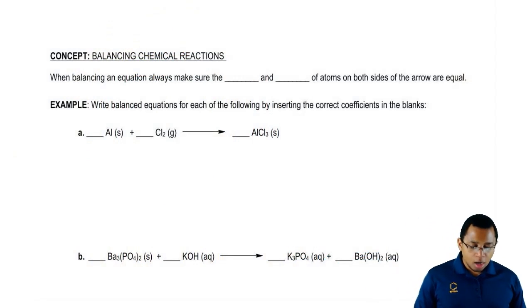We're going to say when balancing an equation, always make sure that the number and types of atoms on both sides of the arrow are equal. For this example, it says, write balanced equations for each of the following by inserting the correct coefficient in the blanks.